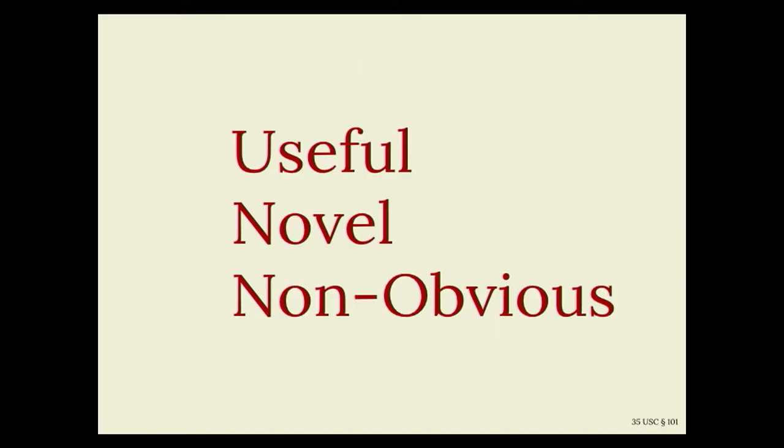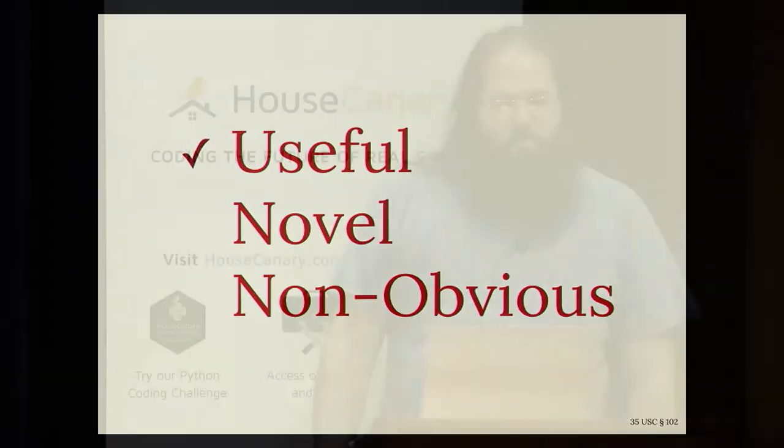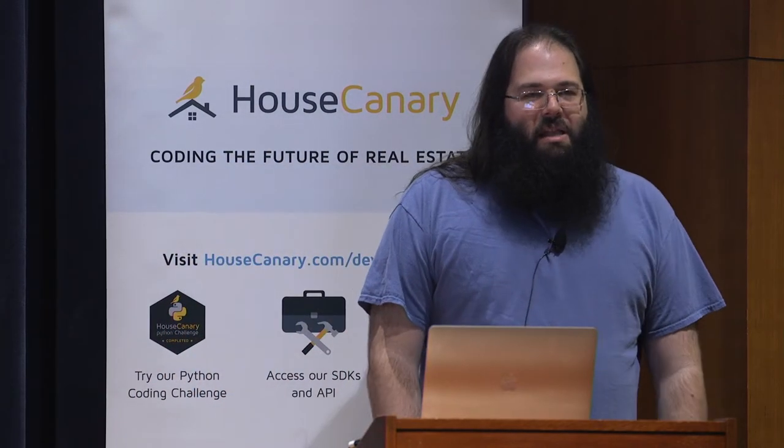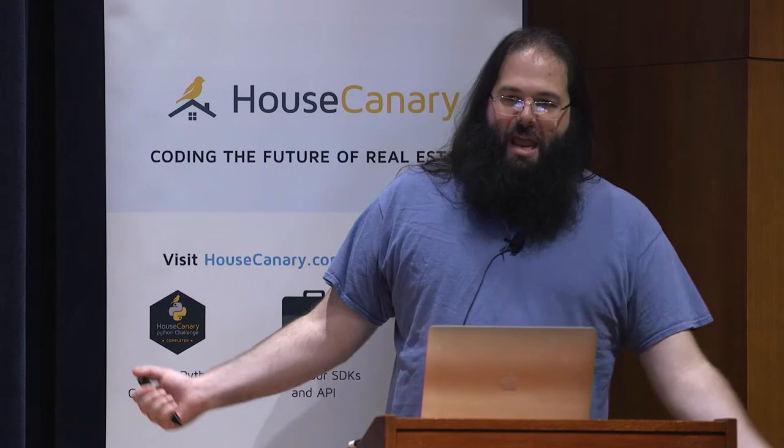For an invention to be patentable, it has to meet three criteria. First, the invention must be useful — actually do something. This rules out things like perpetual motion machines. Next, it has to be novel — a new invention that did not exist previously, sufficiently distinct from all prior art. And finally, it has to be non-obvious — meaning that at the time of the invention, it would not have been obvious to a 'person having ordinary skill in the art.' This is often the most contentious part of patent examination, as patent examiners aren't experts in every field, and they usually rely on post-hoc examination by the courts.